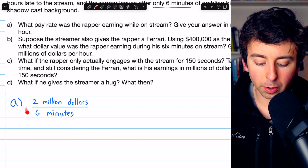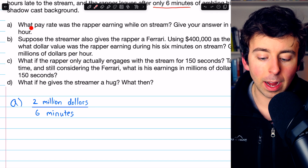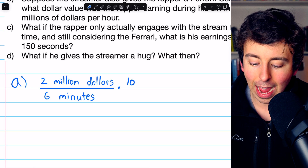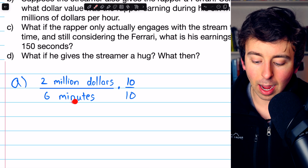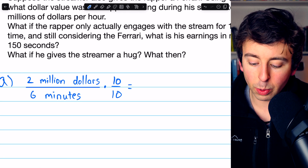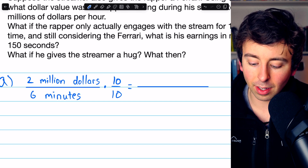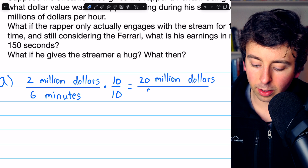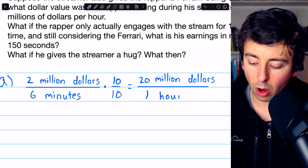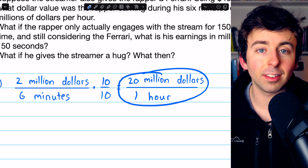So we start with $2 million per six minutes as our pay rate. We're asked for the hourly pay rate, so we can convert by multiplying by 10 over 10, because six minutes times 10 is 60 minutes, or one hour. In the numerator we get $20 million — that's $2 million times 10. So $20 million over 60 minutes, and since 60 minutes equals one hour, our final answer for Part A is $20 million per hour.